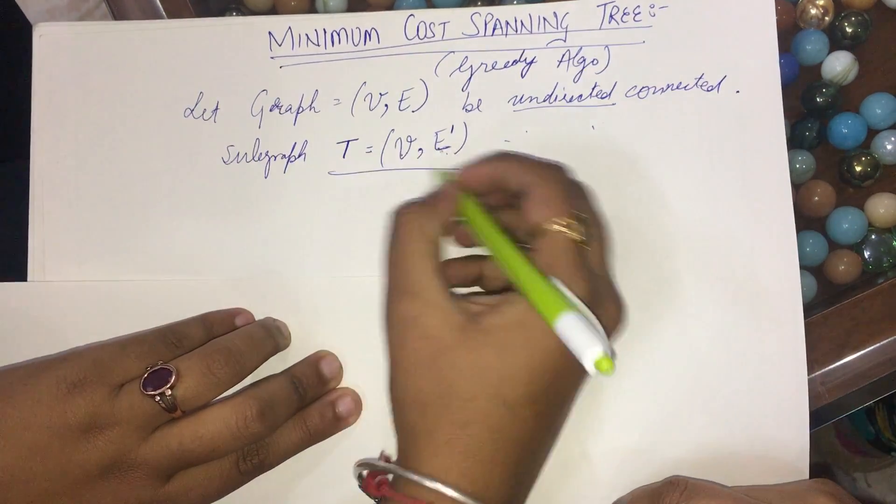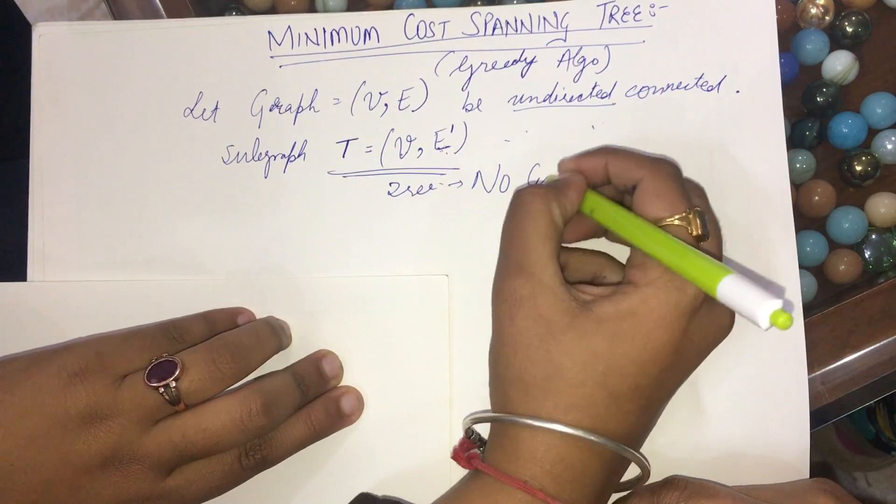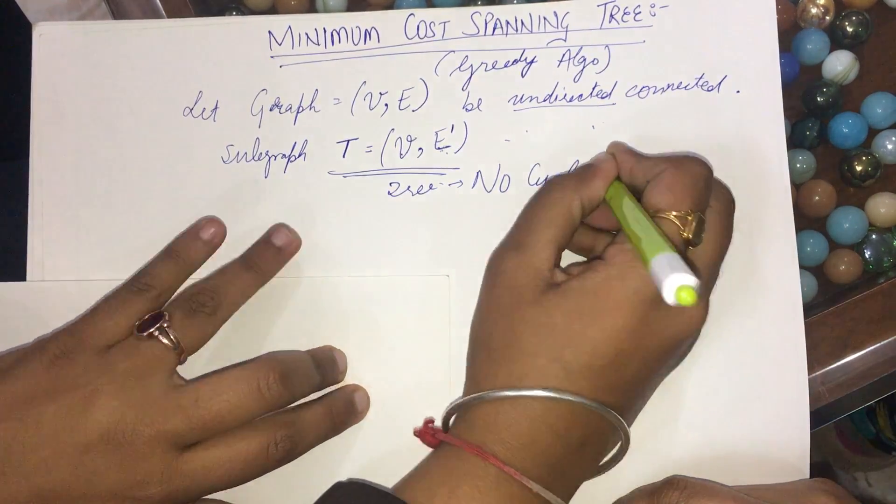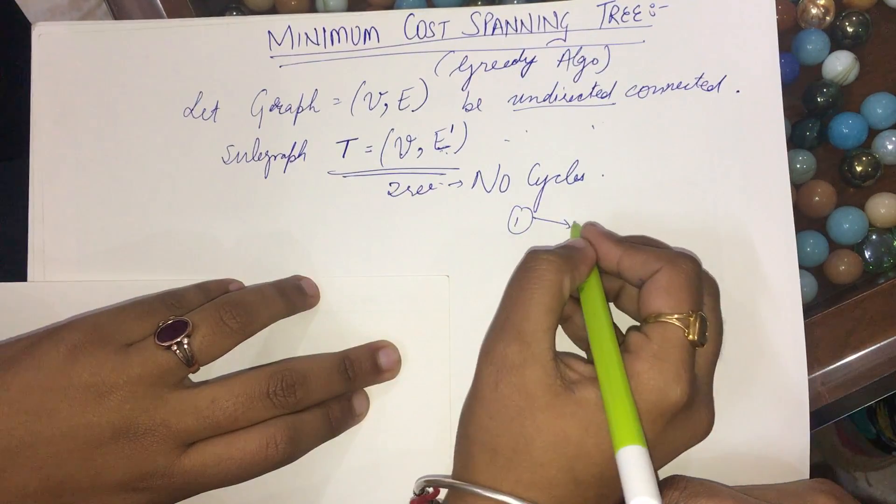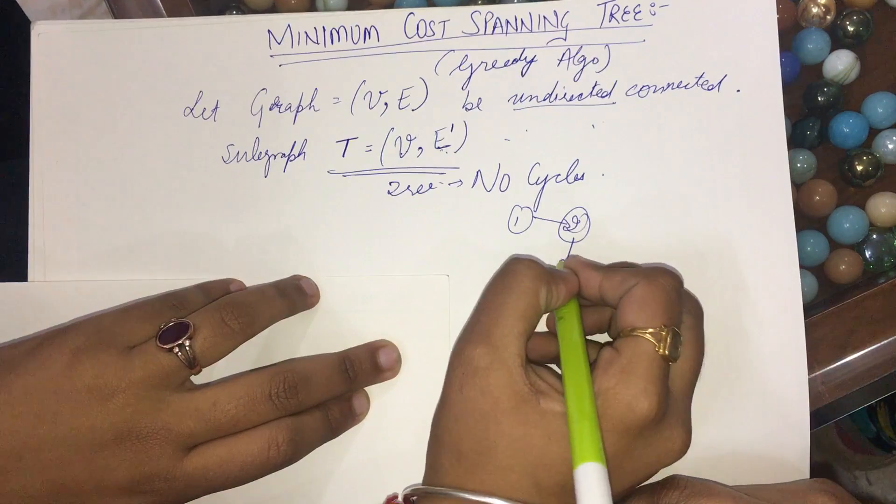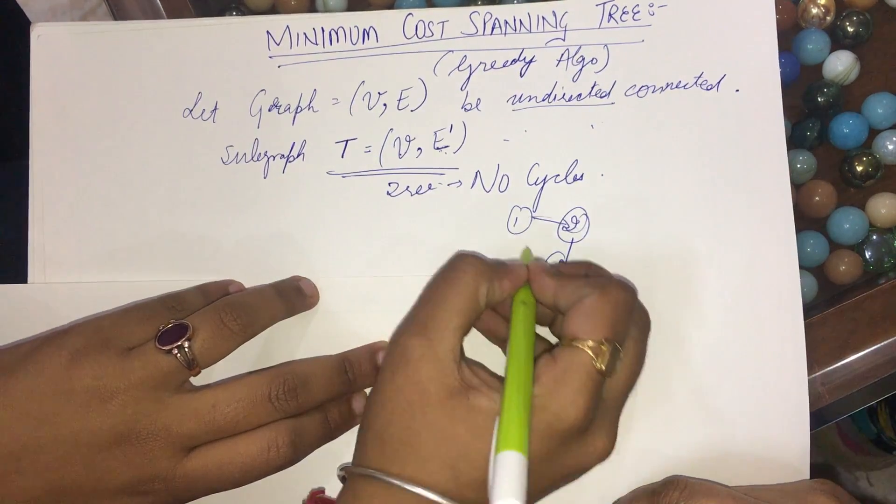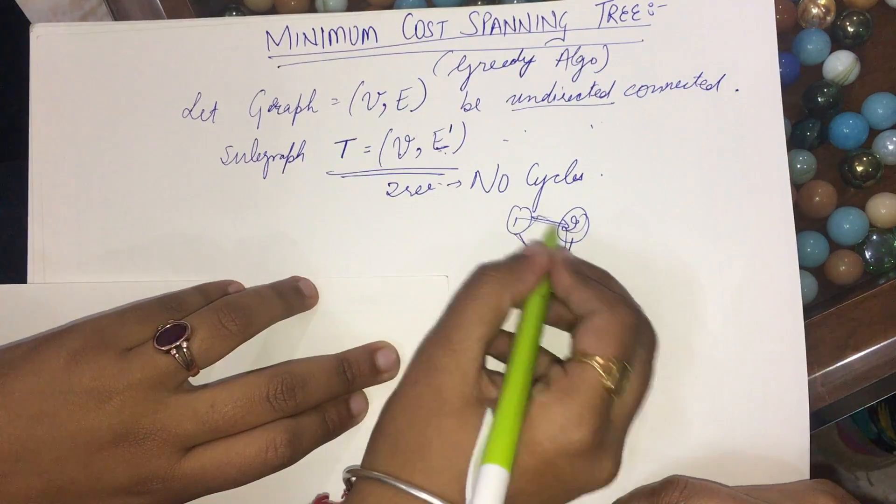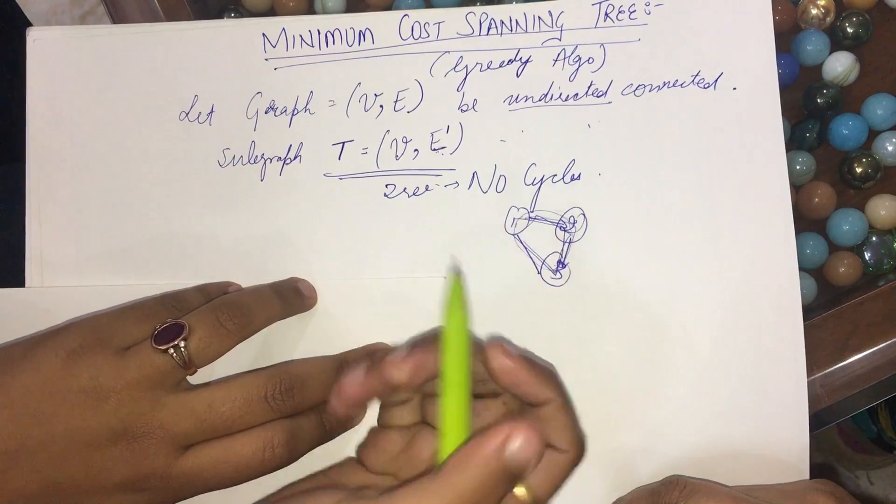So what is the difference? This will be a tree. What is the difference between tree and graph? The tree has no cycles, whereas the graph can have cycles. Now what are these cycles? Suppose I have 1, 2, 3. Here there are no cycles. But suppose if I construct this thing, this means a cycle. Cycle means a complete cycle, right?